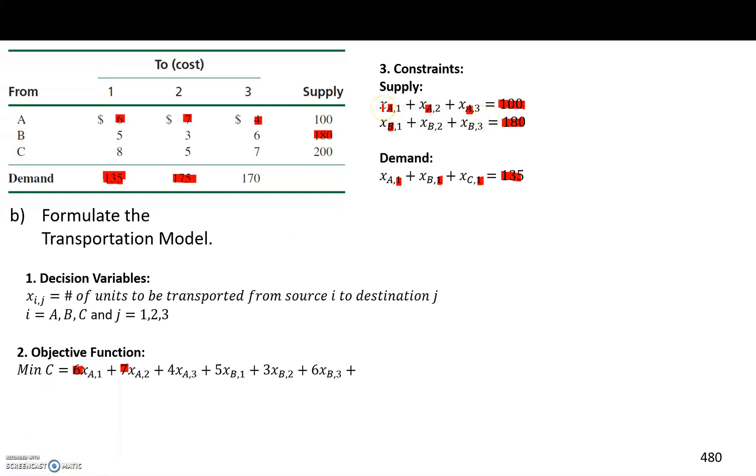The total number of units that goes from A to 1, 2, and 3, respectively. So returning to the demand side, we have the total number of units going to 1 from A, B, and C.